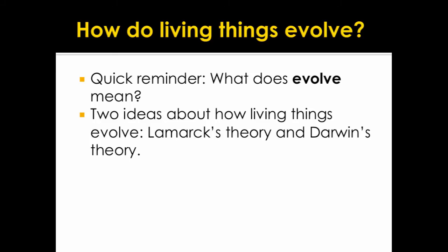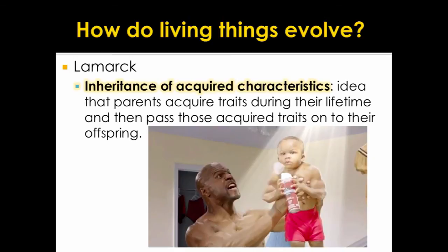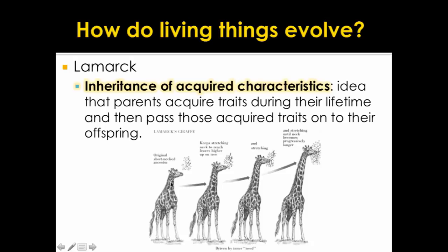Now let's talk about how living things evolve. Evolve means change over time. There are two major ideas about how living things evolve: Lamarck's theory and Darwin's theory. Lamarck came up with the idea of inheritance of acquired characteristics — the idea that parents can acquire traits during their lifetime and pass those acquired traits on to their offspring. For example, if somebody worked out and had big muscles, they could pass those big muscles on to their kids. Similarly, giraffes could stretch their necks and pass on stretched necks to their kids. But we know that's not true — you can only pass on things to your kids that are coded in your genes.